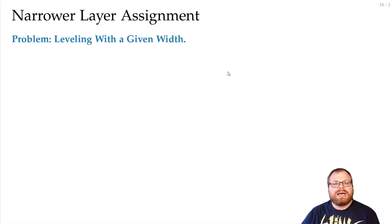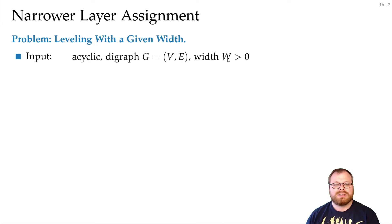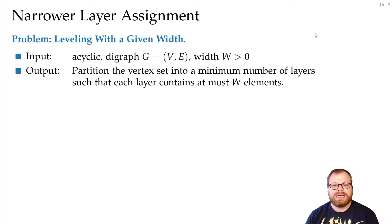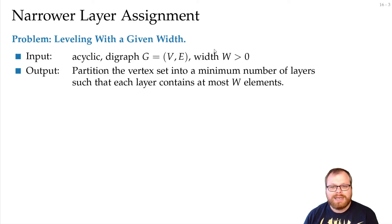This gives us the problem of leveling with a given width. The input is an acyclic digraph and a parameter w giving the desired width. The output is a partitioning of the vertex set into a minimum number of layers such that every layer contains at most w elements. If we don't care about height we can put every vertex on its own layer, but finding the minimum number of layers with this width constraint is not that easy.